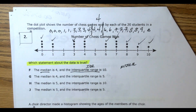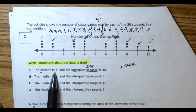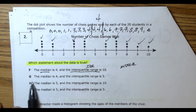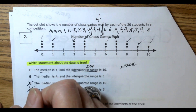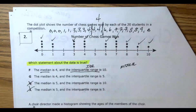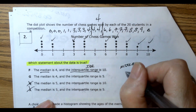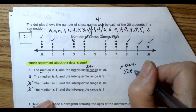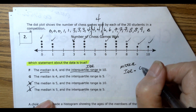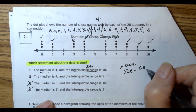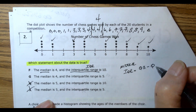Looking at our answer choices, two options say median is 4 and two say median is 5. We can eliminate the two that say median is 5. Now we're looking at the interquartile range. IQR equals Q3 minus Q1.